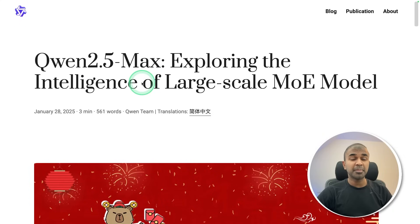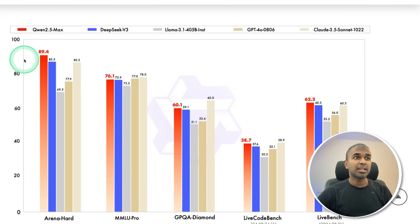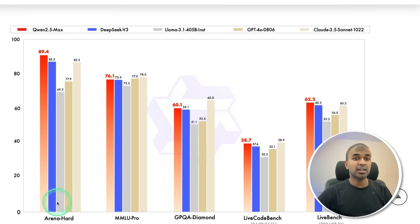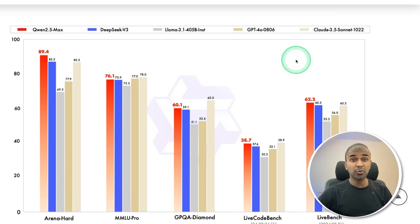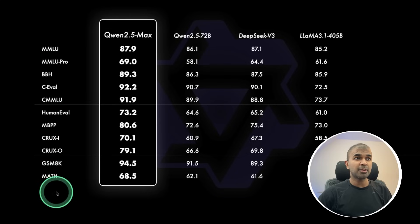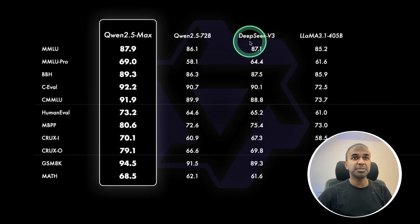Qwen 2.5 Max is another amazing model, completely free, and it beats DeepSeek v3 and GPT-4o in Arena Hard. Live bench shows open source models competing with closed source models, with comparisons against various other models including DeepSeek v3.